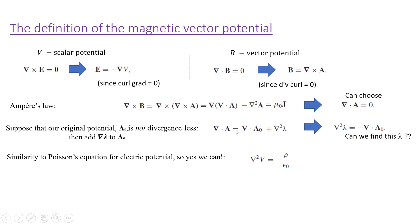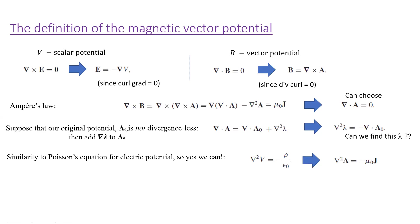To summarize: we can always choose the vector potential so that it has zero divergence. When we choose it to have zero divergence, the messy term goes away and we're left with the simpler equation. This is our defining equation for the vector potential. It's a differential equation, and we'd still like to know how to calculate the vector potential constructively as opposed to solving a differential equation.